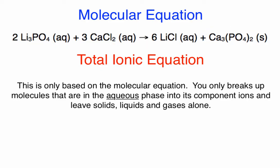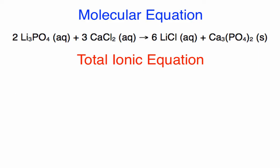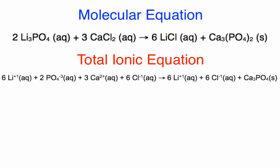Please take a minute to try to write the total ionic equation between lithium phosphate and calcium chloride. The total ionic equation should look like this: six lithium ions (aq) plus two phosphate ions (aq) plus three calcium ions (aq) plus six chloride ions (aq) form six lithium ions (aq), six chloride ions (aq), and one calcium phosphate (s).